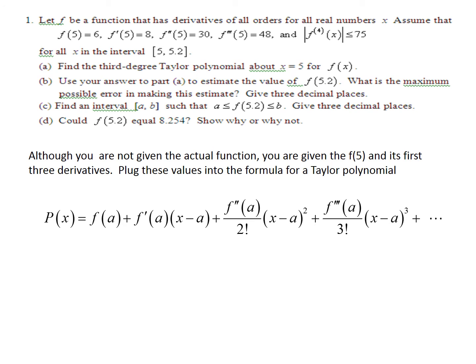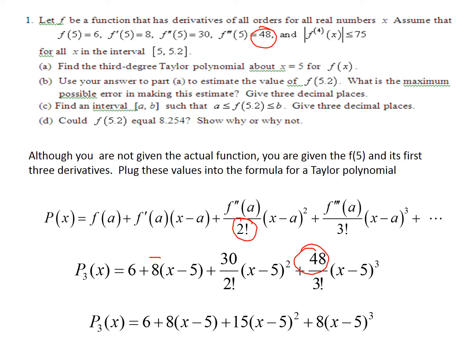So we're using this formula for Taylor series and using the derivatives that we were given. We were given the first derivative is 8, the second derivative is 30, and the third derivative was 48. These values were given to us here, so those values come from there, and then the two factorial, the three factorial come from the formula. Okay, so simplifying that, we get this is the third degree polynomial.